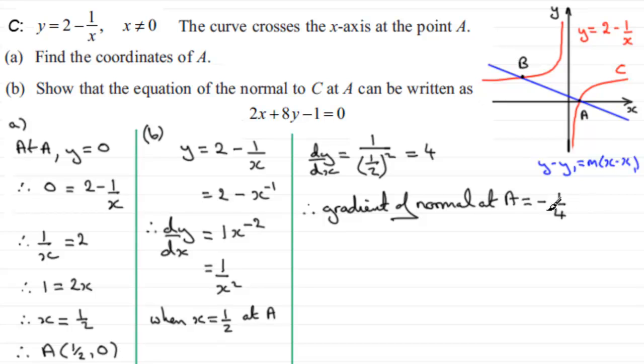Now, I've got the gradient. I've got my x1, y1. So, I'm in a position to find the equation of the normal. So, therefore, the equation of the normal at A is. It's going to be y minus y1. We'll put that 0 in. And then it equals m, the gradient, minus a quarter multiplied by x minus x1.